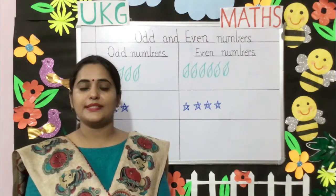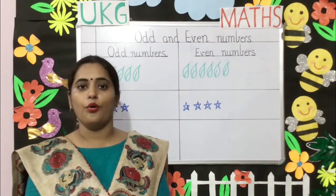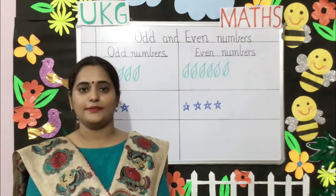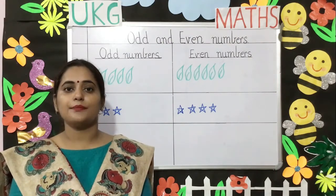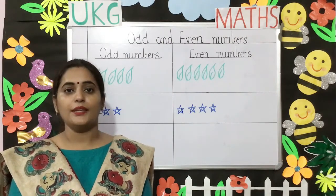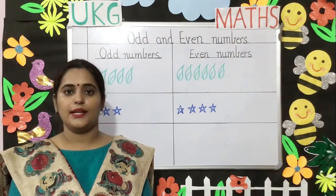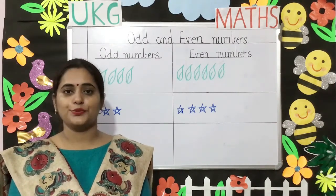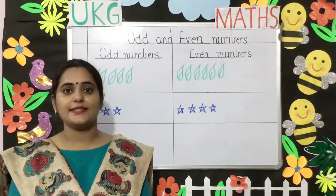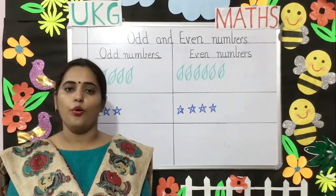All the numbers that we have studied can be either odd or even. A number that can be grouped in twos is an even number, and a number that cannot be grouped in twos — that is, a number that remains — is an odd number.